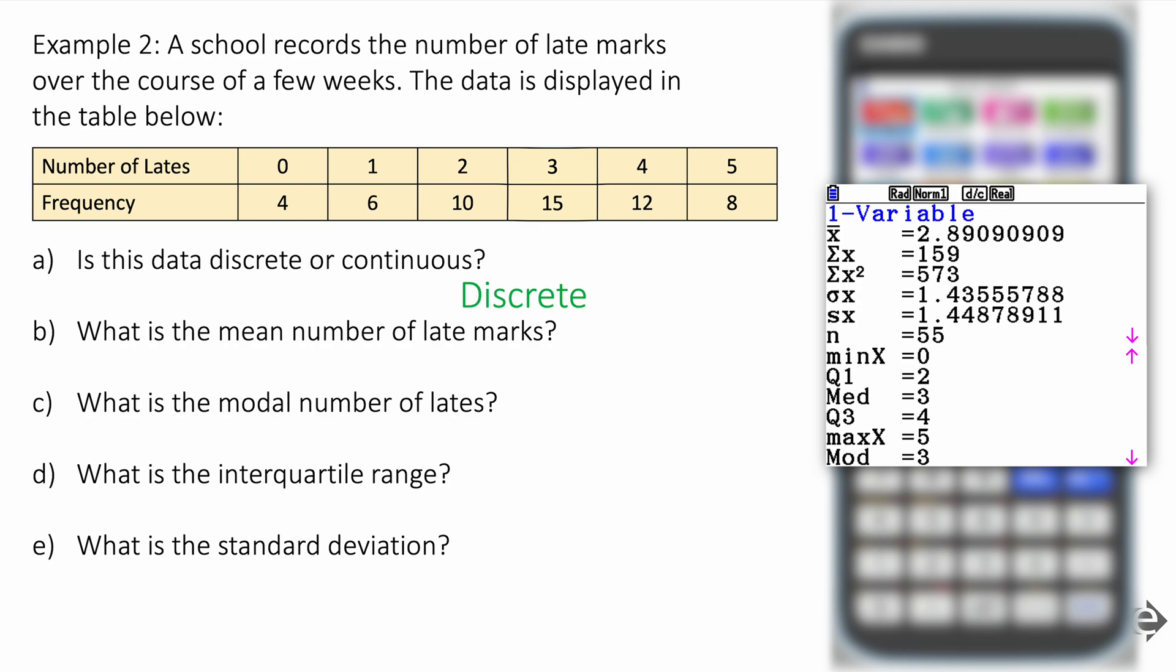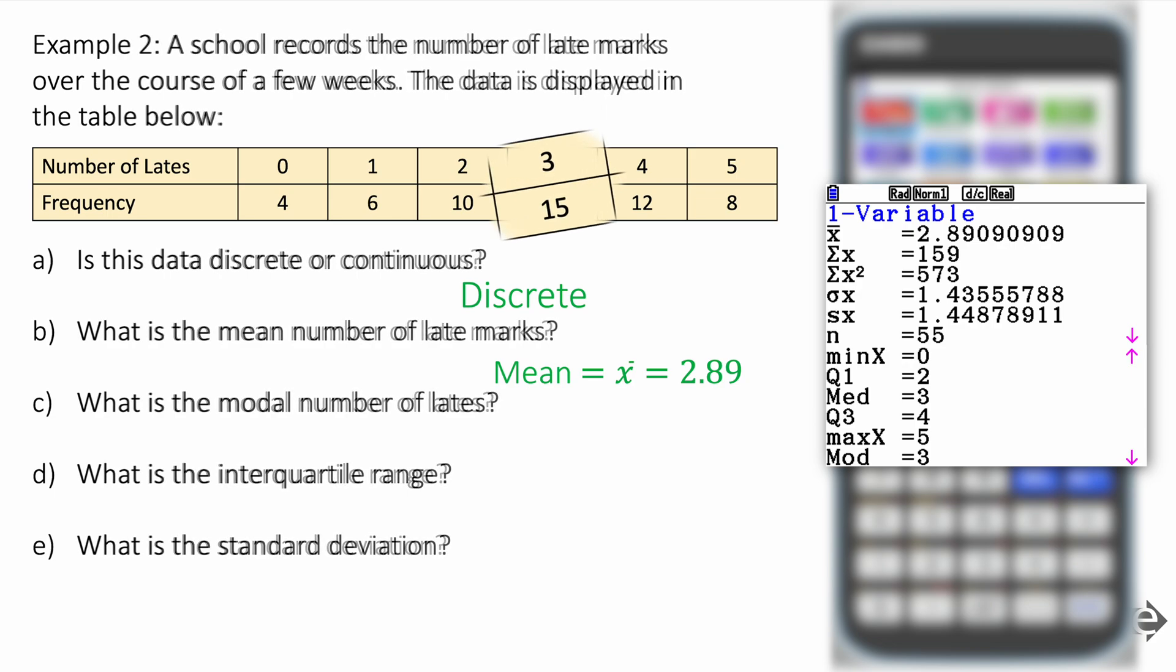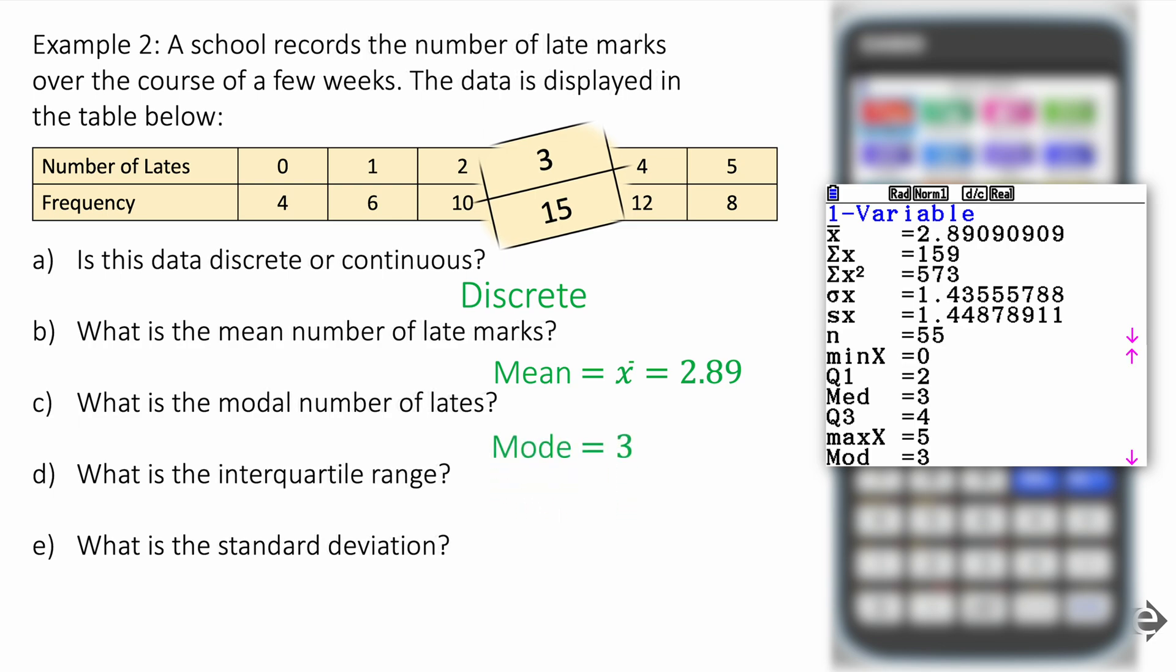And it looks like this. Now, what is the mean number of lates? Well, that's given by X bar. So that is the very first number in the list of data. X bar is 2.89. And we can write it like this. In IB, we always write things to three significant figures. What is the modal number of lates? Well, that's given by mod at the bottom. It's three. But it's also just the most common number of lates. And the highest frequency in this list is 15, and 15 matches to three. So that makes sense as well without even thinking about the GDC.